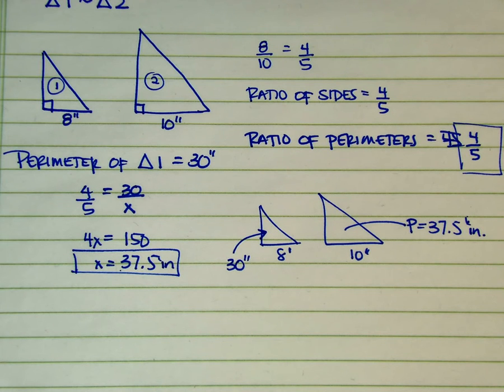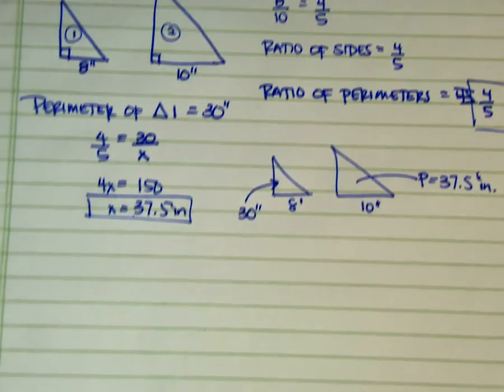So now we know how to find the perimeter of the ratios. Ratio of the perimeters. Okay, so now we have the ratio of areas.